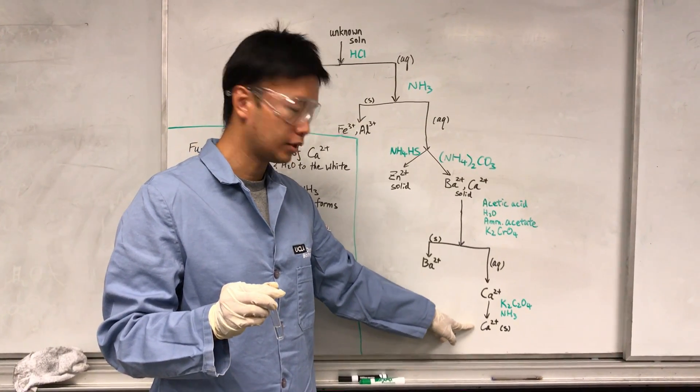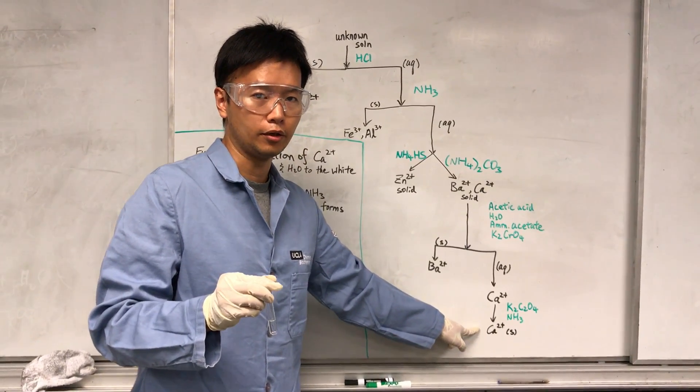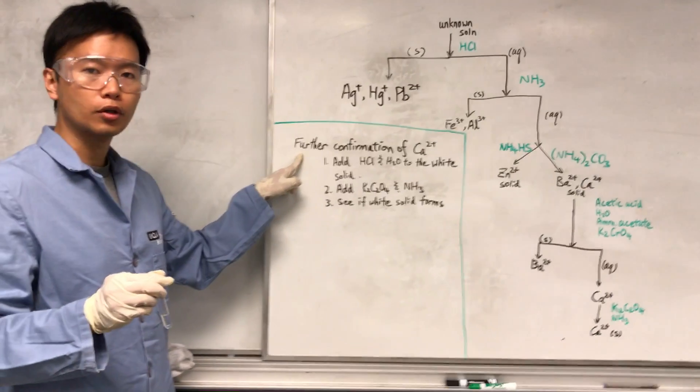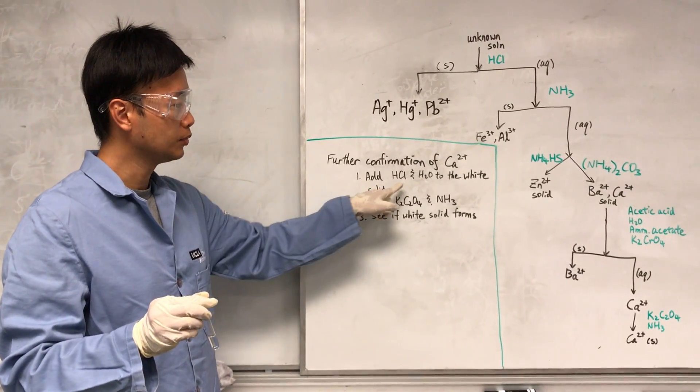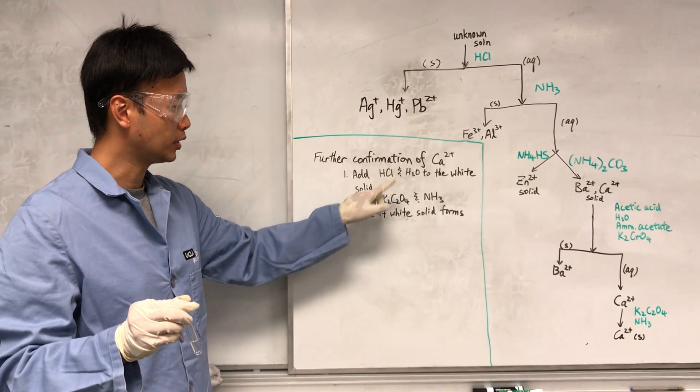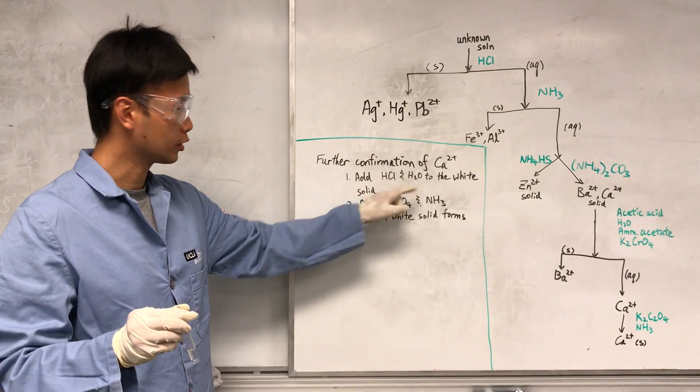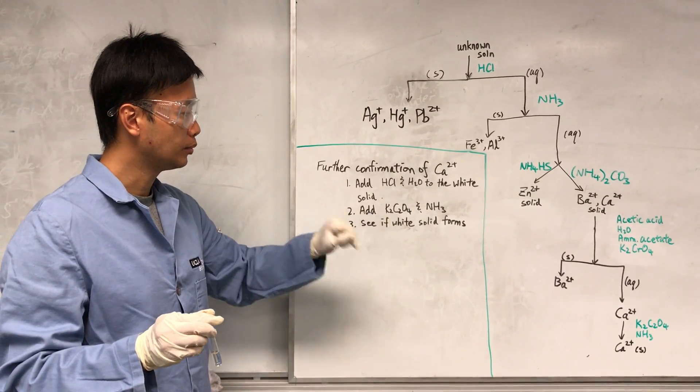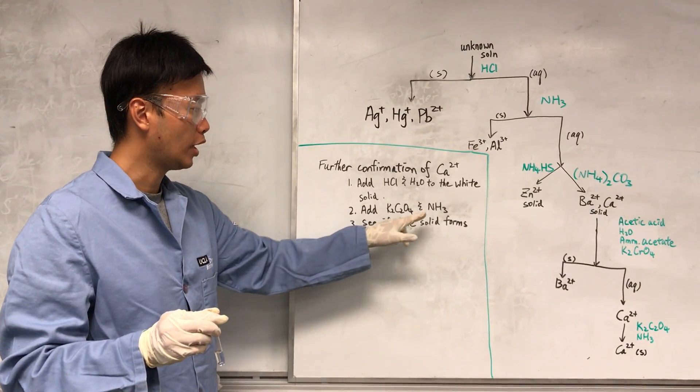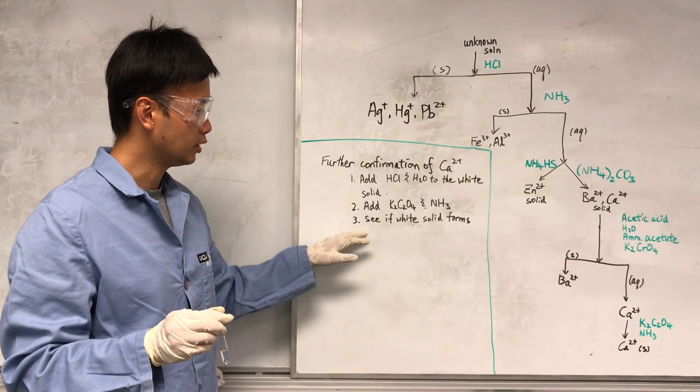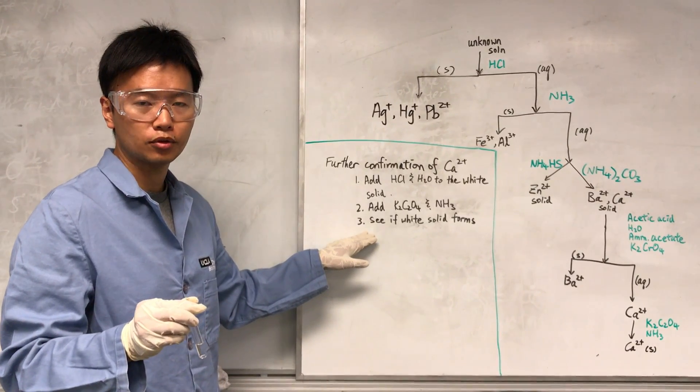Hopefully I will get a white solid. And the other portion I have to further confirm the calcium by dissolving the white precipitate by adding acidic water, then re-adding K2C2O4 and NH3, which is basic, and eventually see if I have white solid form.